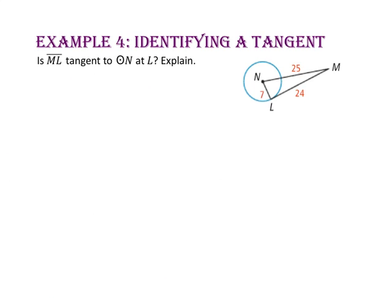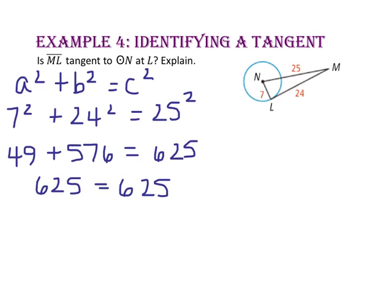In example 4, we will identify a tangent. Is segment ML tangent to circle N at point L? Explain. If segment ML is a tangent, it will be perpendicular to radius segment LN. If this is a 90 degree angle, then we will have a right triangle. So let's use the Pythagorean theorem: 7 squared plus 24 squared should equal 25 squared. Since 49 plus 576 does equal 625, we know that segment NL is perpendicular to segment LM. That means segment ML is a tangent to circle N at point L.